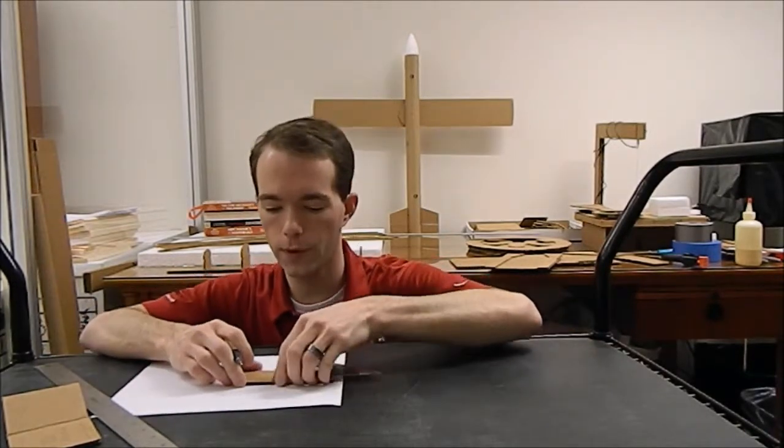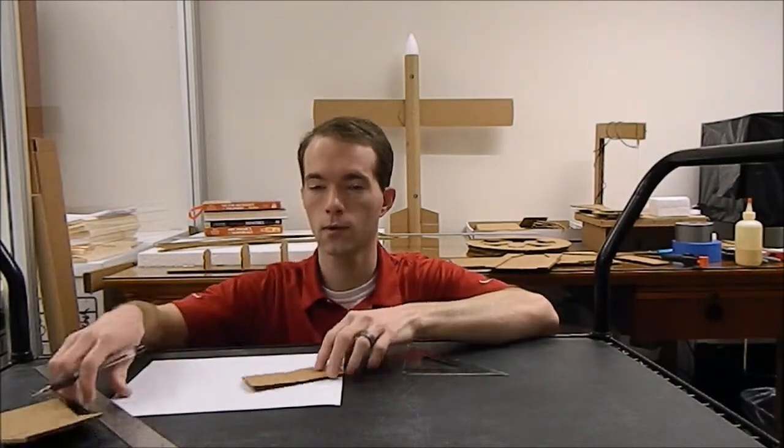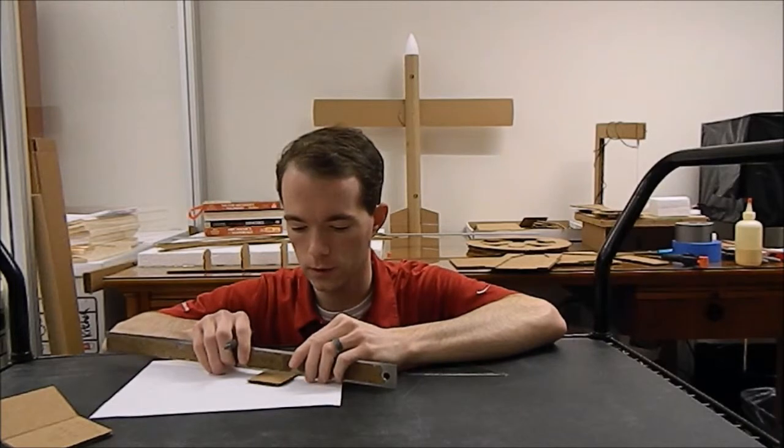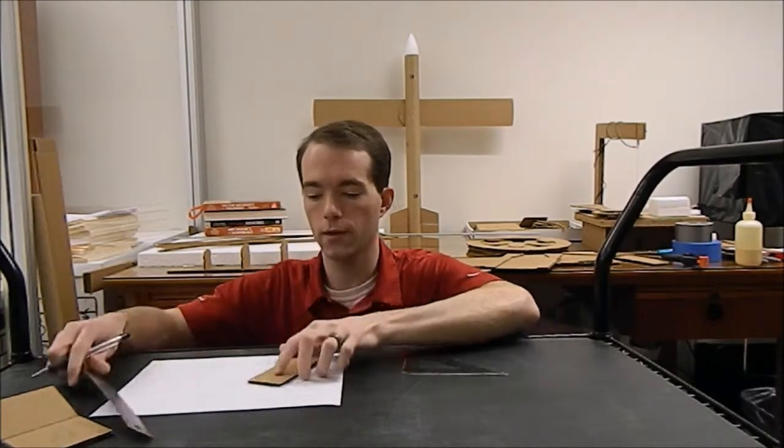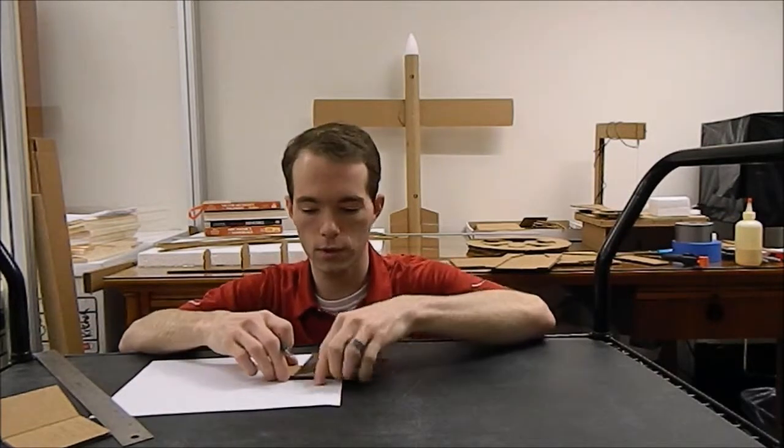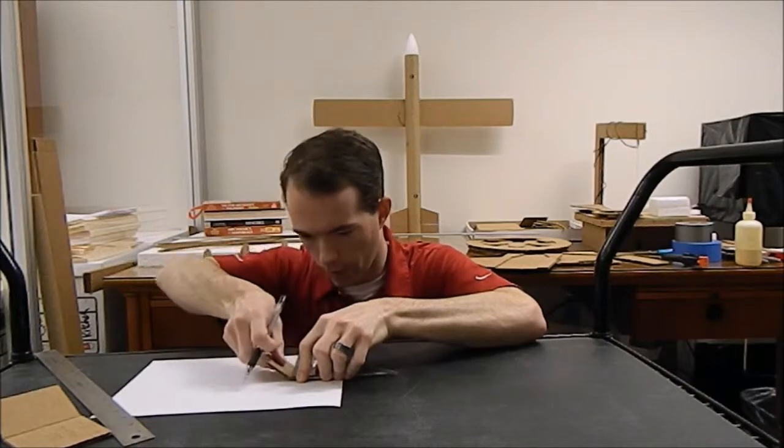So, we'll make a mark there at three and a half. Flip our square around. We'll draw a perpendicular. We'll use our metal thing. You're probably going to want to do this a few times for different samples just to make sure that you get a statistically relevant result. And we'll bend.